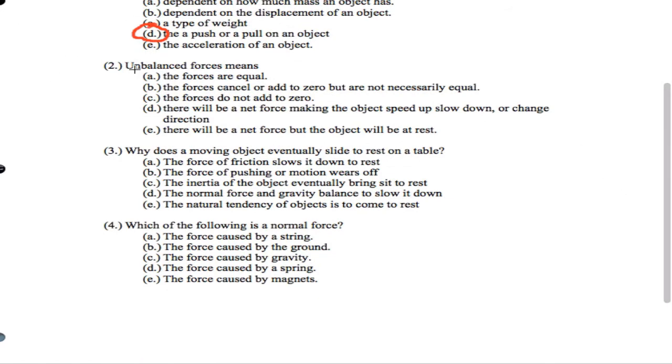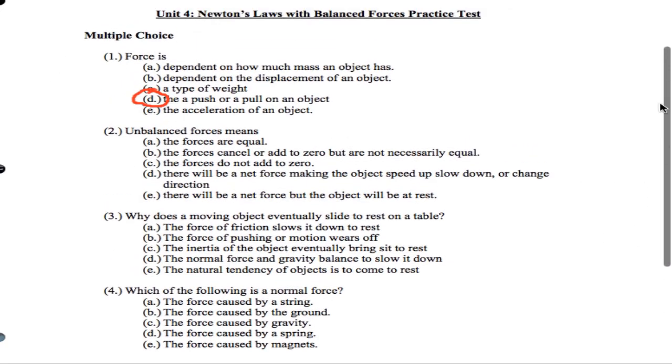Now the term unbalanced force, this is the idea that we can have more than one force on an object. And if the force is balanced, the object is going to either not move or it's going to remain moving in a straight line at a constant speed. That's Newton's first law.